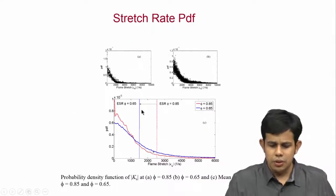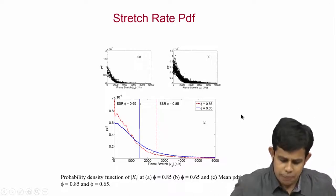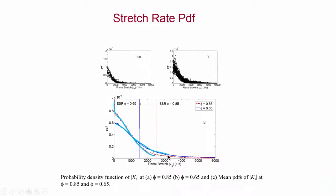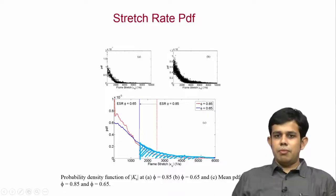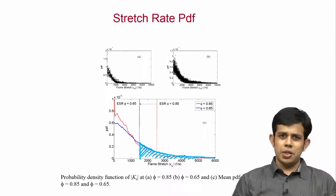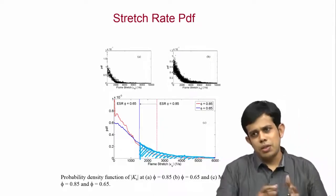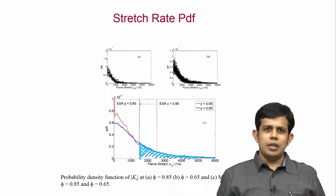Joint PDFs also confirm this. If you obtain the stretch rates: far from blow-off this is the PDF, and near blow-off this is the PDF — as blow-off is approached this PDF shifts towards the right, so the flame experiences more and more straining and more stretching. Of course the extinction stretch rate shifts in the opposite direction. Now you see that this full part is experiencing stretch rates which exceed the corresponding extinction stretch rates. As a result the flame can indeed blow off in these parts, and when this local extinction becomes too much the flame can go inside the recirculation zone where it can lose heat into the flame holder and blow off.